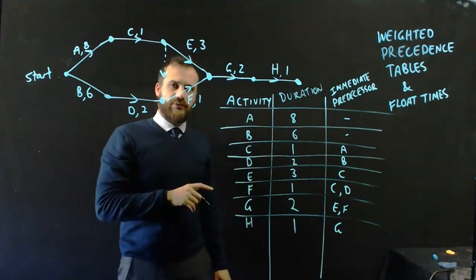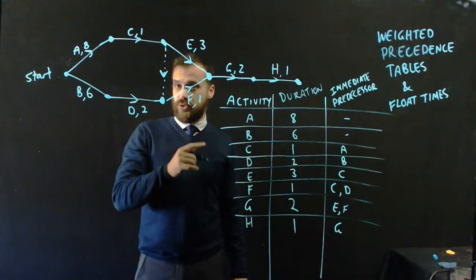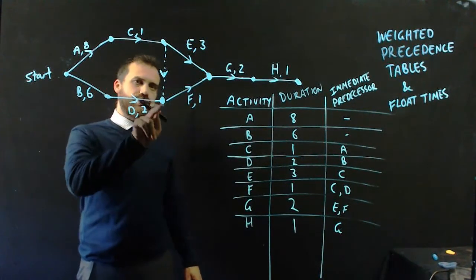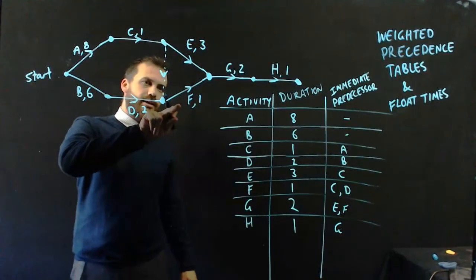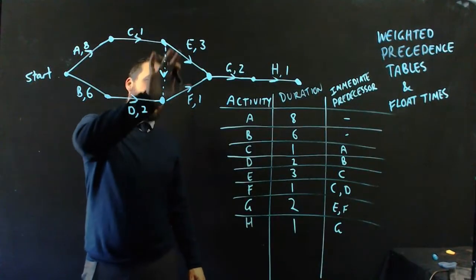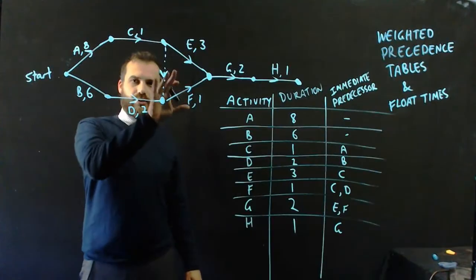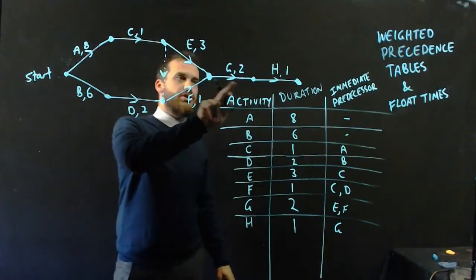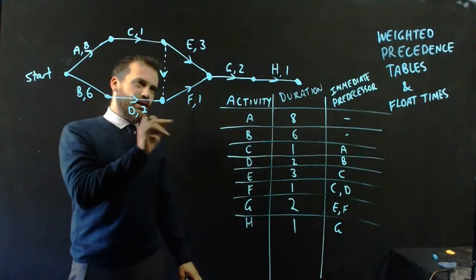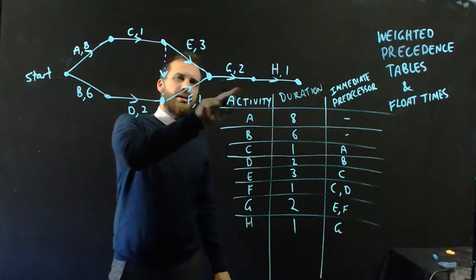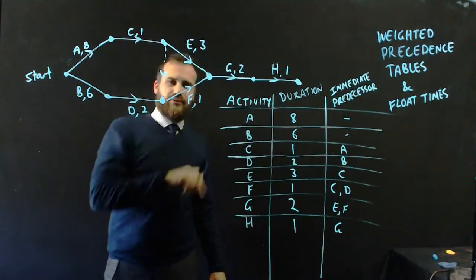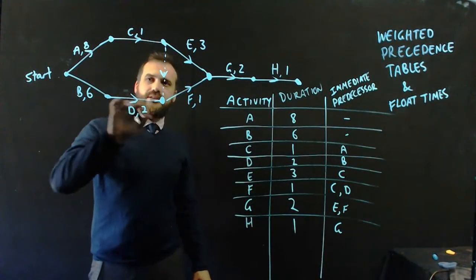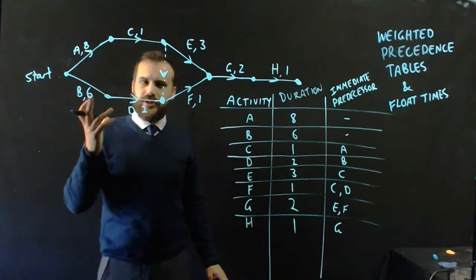Now, I promised you we'd also talk about float times, so let's talk about float times. Now, to talk about float times, I'm going to draw your attention to this part here. E and F are the important things that I want to talk about. Now, E and F are predecessors to G, right? So that means that I can't start doing G until E and F are complete. Now, I can't start doing E and F until D and C are complete, right?